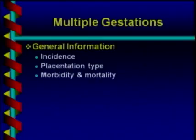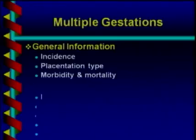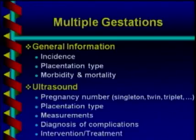The outline of my lecture is as follows. I'm going to talk about some general information, including incidence of multiple gestations, placentation type — which refers to chorionicity and amnioticity — and a little bit of background about morbidity and mortality. Then I'll spend most of my time talking about ultrasound of multiple gestations in a number of categories.